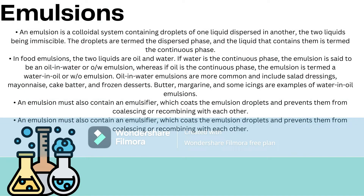An emulsion is a colloidal system containing droplets of one liquid dispersed in another, the two liquids being immiscible. The droplets are termed the dispersed phase and the liquid that contains them is termed the continuous phase. In food emulsions, the two liquids are oil and water. If water is the continuous phase, the emulsion is said to be oil-in-water. Whereas if oil is the continuous phase, the emulsion is termed water-in-oil.